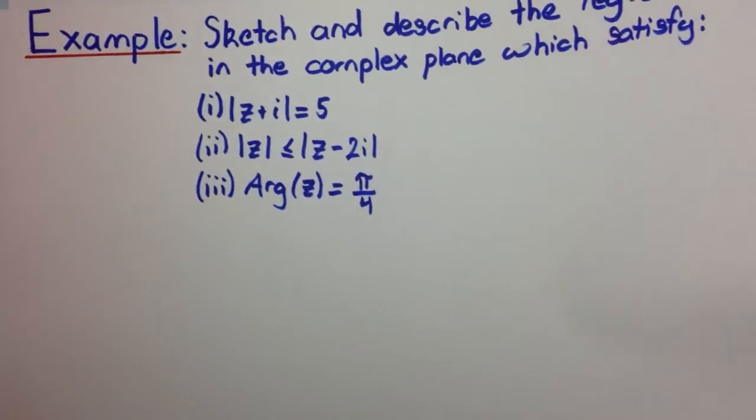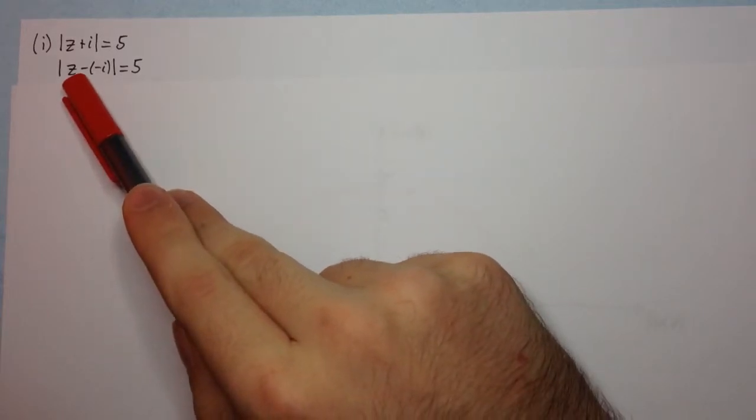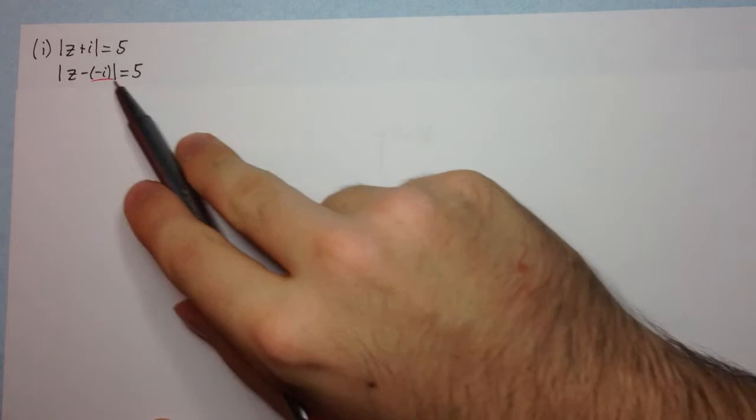So the first one is the modulus of z plus i equal to 5. The first thing that we need to do is to put it into our standard form. So we write it with z minus a complex number. We always want this to be a minus here. And the reason we do that is because this part that I underlined in red, that's the center of our circle. This is now in the standard form of a circle.